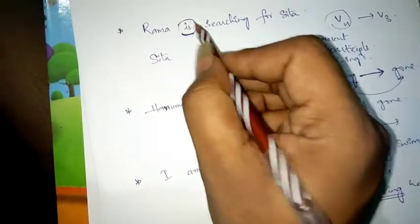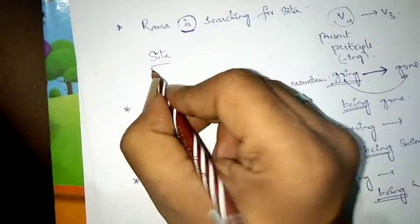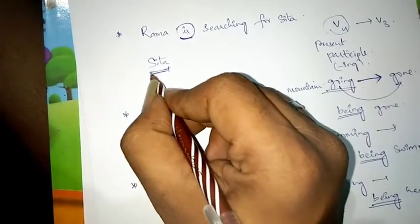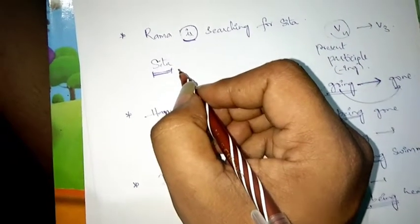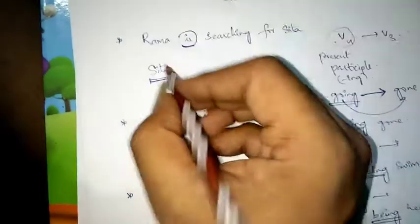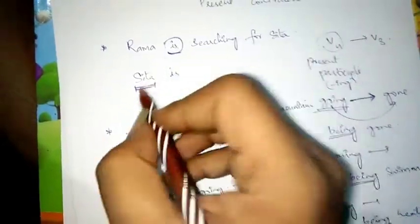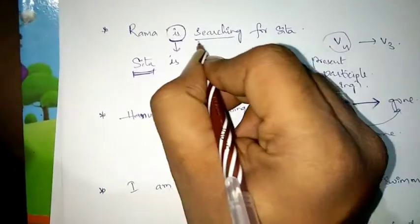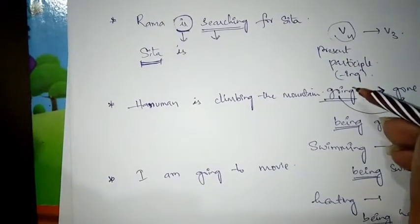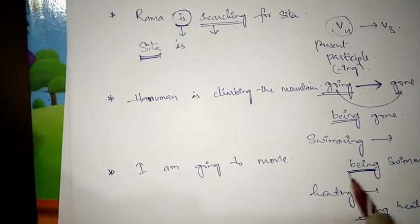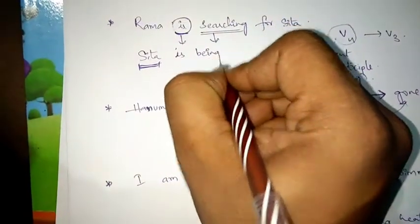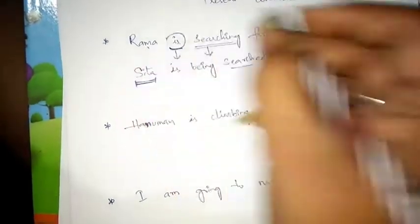We have to search for an auxiliary verb. Before using it, confirm whether the noun is singular or plural. Object becomes subject — Sita is a singular noun, so we can use 'is'. Now convert V4 into V3. We need 'being', so: 'Sita is being searched by Rama.'